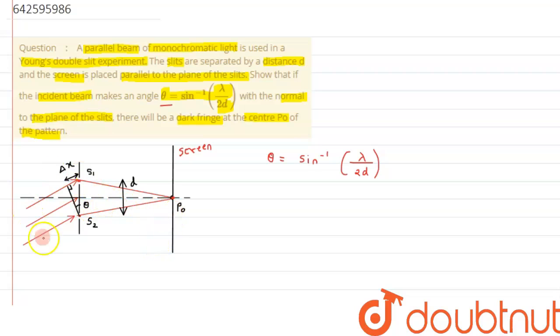So from here we can clearly see the beam which is incident on S₂, that is slit 2, is reaching first as compared to the beam which is hitting S₁, so there will be a path difference between the two beams. We can write from the figure, this path difference Δx can be written as: